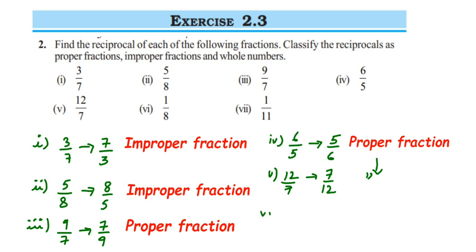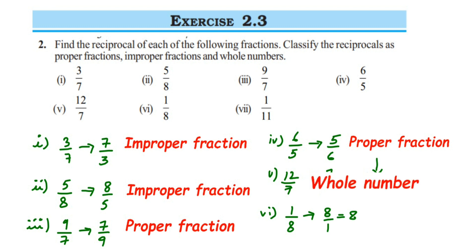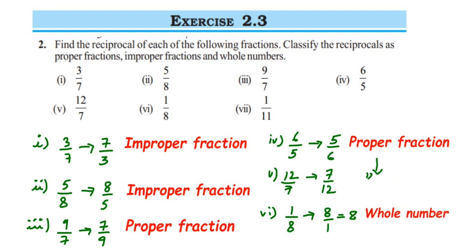The sixth one — we have 1 by 8. The reciprocal of 1 by 8 is 8 by 1, which is the same as 8. Since 8 is a whole number, the sixth one is a whole number.